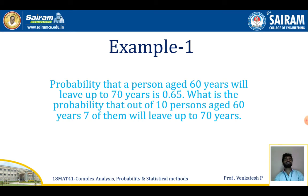First we need to find what is p, what is q, and what is the number of trials. Let p be the probability that a person aged 60 years will live up to 70 years, given as 0.65, so p = 0.65. From p + q = 1, we get q = 1 - p = 0.35. The total number of persons is 10, so n = 10.